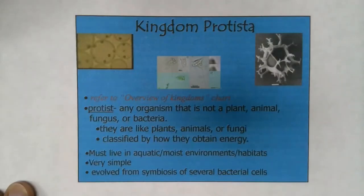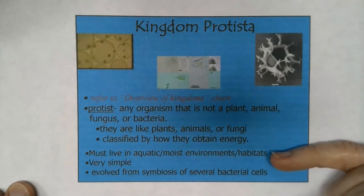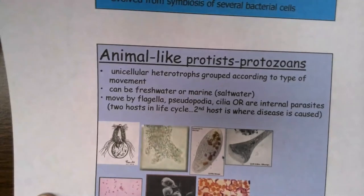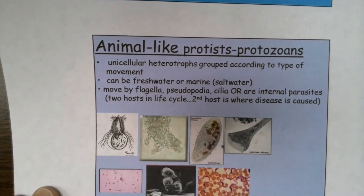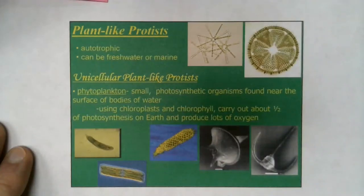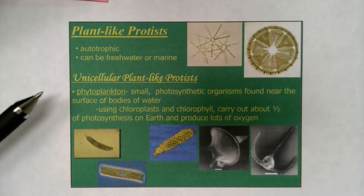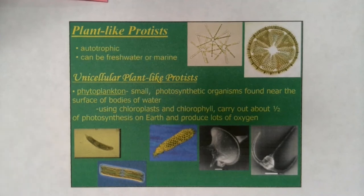To reiterate: protists are classified by how they obtain energy. They are either autotrophs or heterotrophs. If they're heterotrophs, they're either consumers or decomposers, being like either animals or like fungus. The animal-like protists are classified by how they move. When we go to plant-like protists, they're all autotrophic. They can live in either freshwater or marine habitats, and we group them as either unicellular or multicellular plant-like protists.